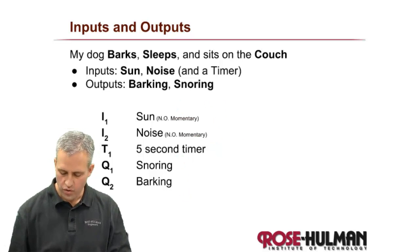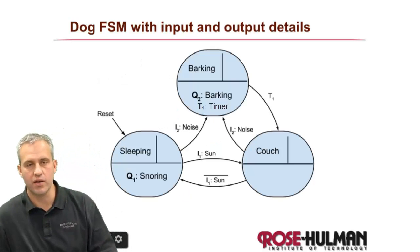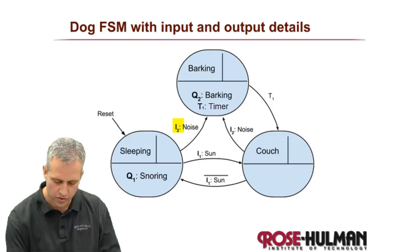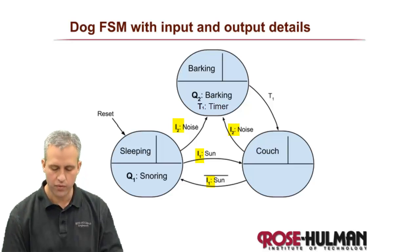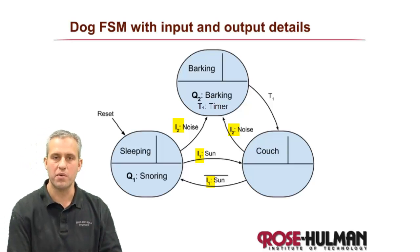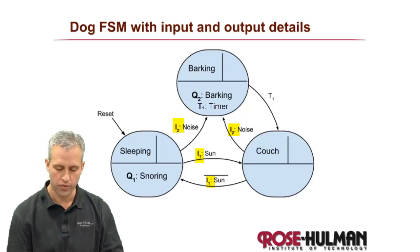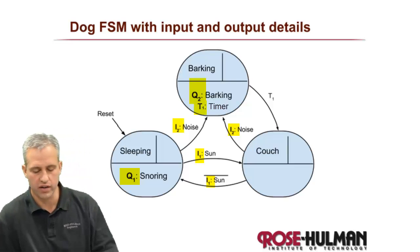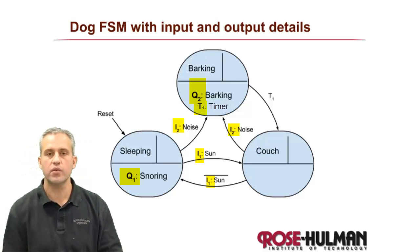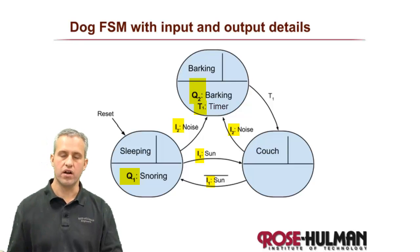Now we go and add those things to our finite state machine. I've got those added already — I2 is on noise, I1 is on the sun, and I1-bar is on the transition back. The Q's are on barking and snoring. Great, so now we've added our Q's.